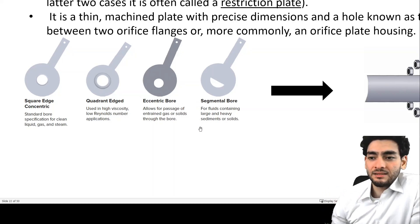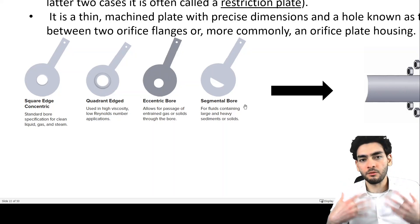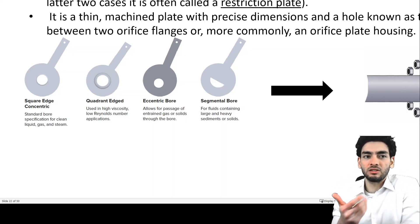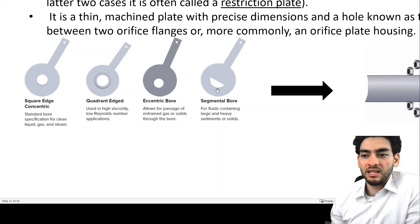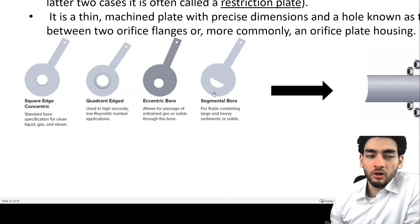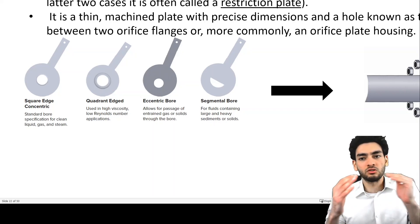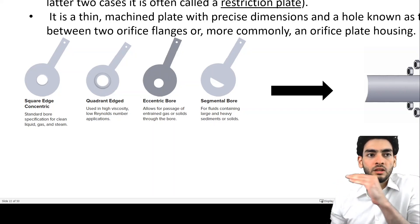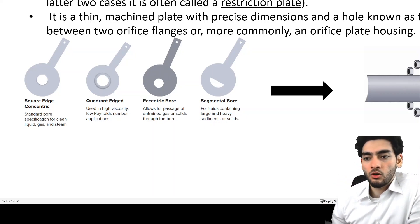...if you have a process that contains slurry with solids that might sediment, then you would need the opening of the hole to be closer to the bottom of the pipe such that there's no sedimentation or solids that accumulate under the opening.